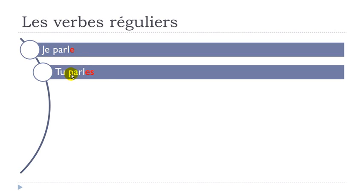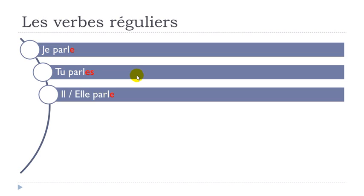JE PARLE, TU PARLES. So let's see what you'll get for IL and ELLE — as you see, you've got IL PARLE, ELLE PARLE. So it's the same form here. So if you really want to only speak and only use the language orally, it's quite easy to conjugate these verbs: JE PARLE, TU PARLES, IL PARLE, ELLE PARLE.